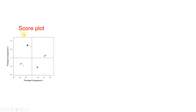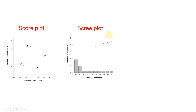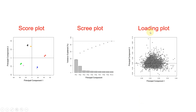Principal component analysis can be represented through a score plot. You can see here there are two components: principal component 1 and principal component 2. PCA can also be represented through a scree plot — usually a scree plot has 10 principal components, with PC1 higher than PC2, PC2 higher than PC3, and so on. PCA can also be represented through a loading plot, where all the samples have been placed in their space.